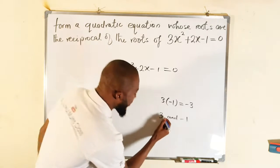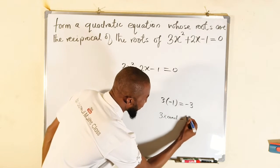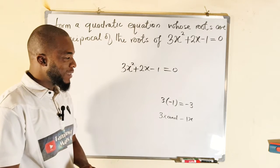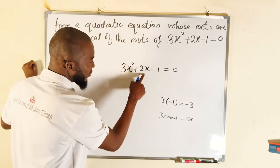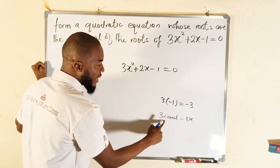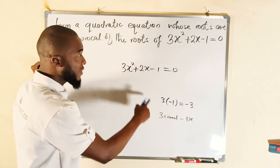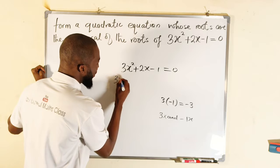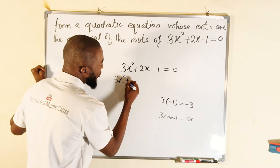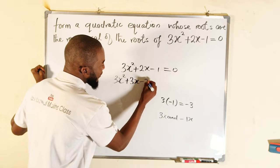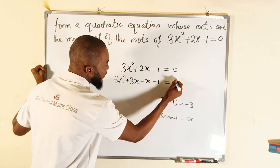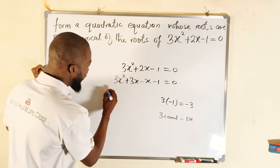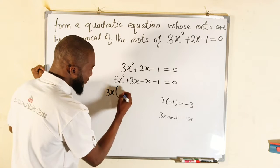So we are going to replace the middle term with 3x and negative 1x. Negative 1x is the same as negative x. So we replace the middle term with 3x minus x. You know 3x minus x is the same as 2x. So this becomes 3x squared plus 3x minus x minus 1 equal to 0. Then we factorize in batches — between the first two terms we have 3x in common.